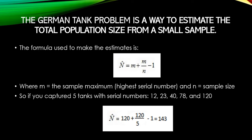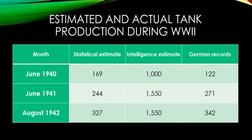What's really cool is that while the mathematicians were back making their estimates, an intelligence committee — spy-type people — were sent out using their own methods to predict the number of tanks produced. Looking at the actual German records obtained after the war: for June 1940, the statistical estimate was 169, the intelligence committee said 1,000 per month, and the actual German records show 122. The statistical estimate stayed close throughout — 244 versus the intelligence committee's 1,550, with actual records showing 271. And as more tanks were captured and techniques improved, the estimate came down to 327 compared to 342 actually produced.